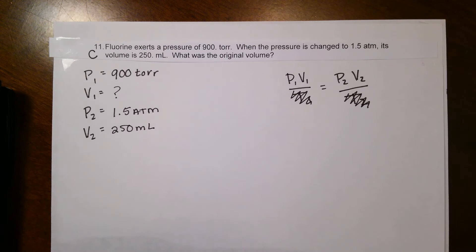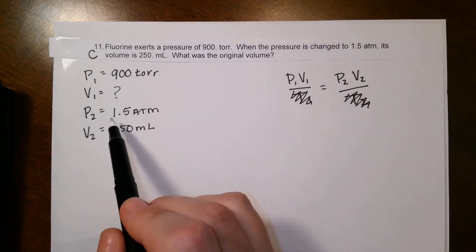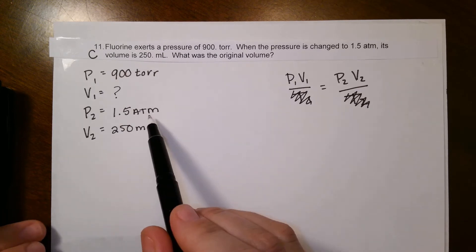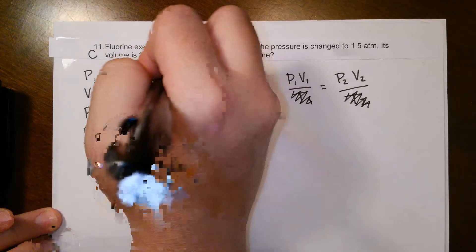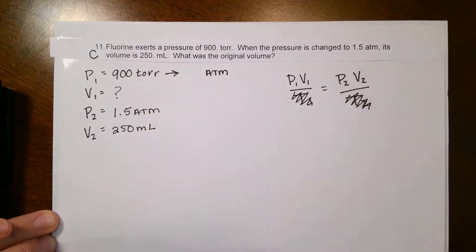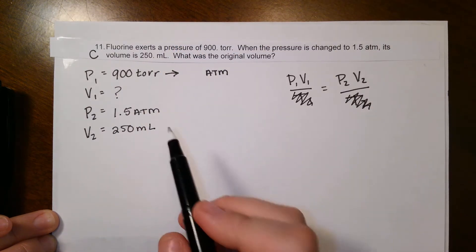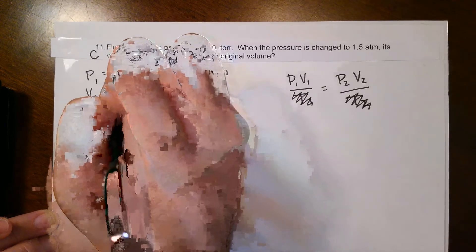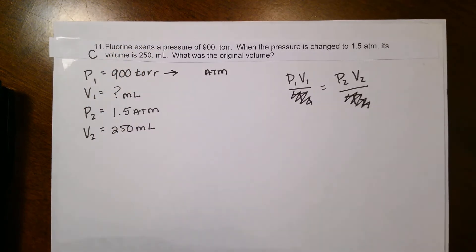A couple things that we should notice right here is that our pressures do not match. So one of these we have to change. I personally prefer atm over anything else, so I'm going to convert my units of torr to atm. The other thing you need to notice is that your volume is given to you in milliliters, which means that your initial volume will come out in milliliters.